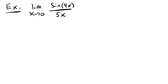For our next example, we have sine 4x over 5x. Remember, the argument of sine and the denominator need to match. Here we have 4x and 5x, so they don't match. What we'll do is multiply by a form of 1 to get what we need. I always look at what's inside the sine function — in this case 4x — so we want 4x on the bottom too. I'll multiply by 4/4, which equals 1, so the function isn't changed.